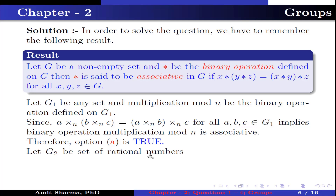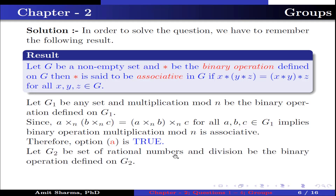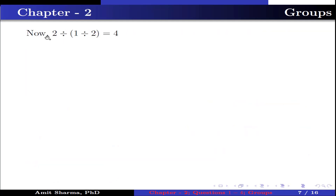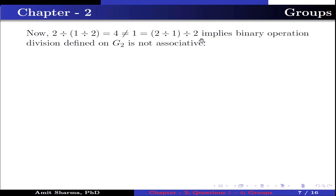Let G2 be the set of rational numbers and division be the binary operation defined on G2. Let 2, 1, 2 be non-zero rationals belonging to G2. Now (2÷1)÷2 = 1, which is not equal to 2÷(1÷2) = 4. This implies binary operation division defined on G2 is not associative. Therefore option B is false.